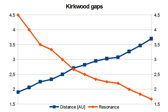The gaps were first noticed in 1866 by Daniel Kirkwood, who also correctly explained their origin in the orbital resonances with Jupiter while a professor at Jefferson College in Cannonsburg, Pennsylvania. Most of the Kirkwood gaps are depleted,